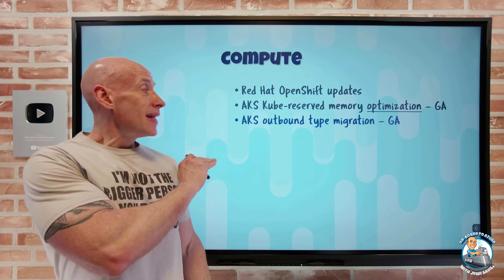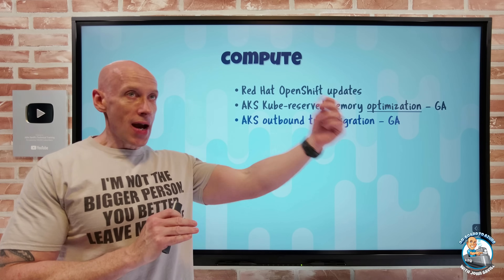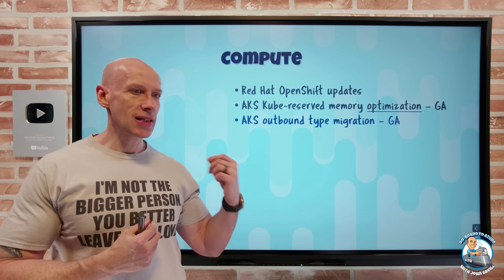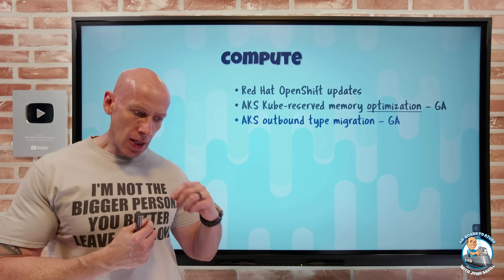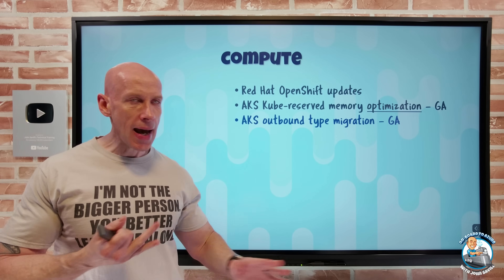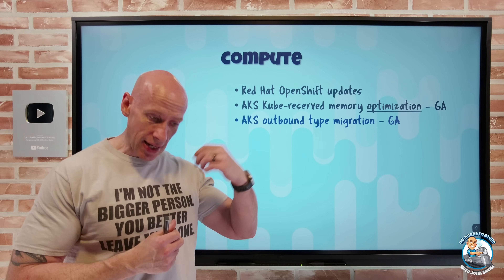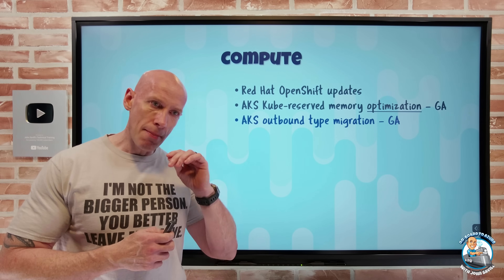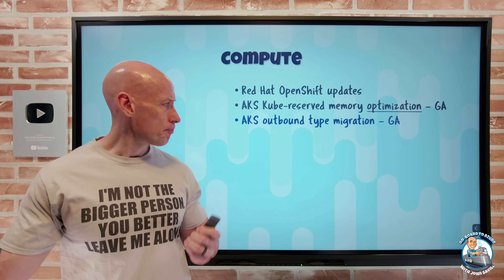I can now change the egress - the outbound type of an AKS cluster post-creation. That could be a load balancer or NAT gateway, or I can use user-defined routes to send it to something else. I can now modify that egress traffic for the cluster.